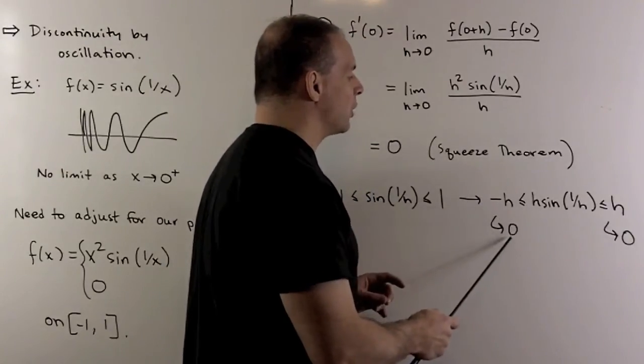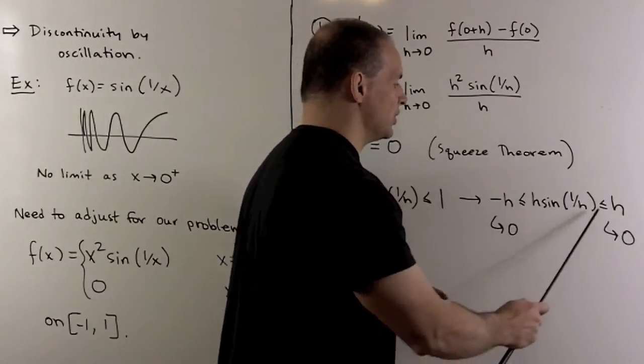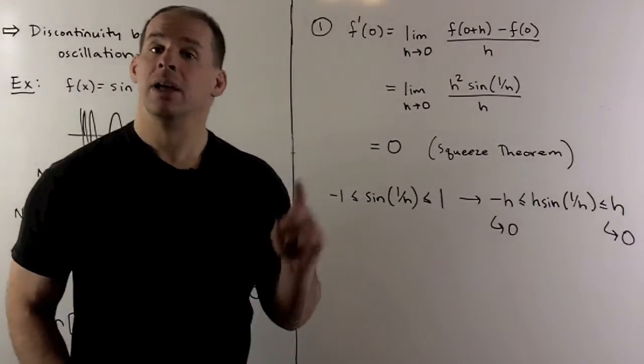So -h goes to 0 as h goes to 0, and h goes to 0. So the middle term must go to 0 also. That's our derivative.